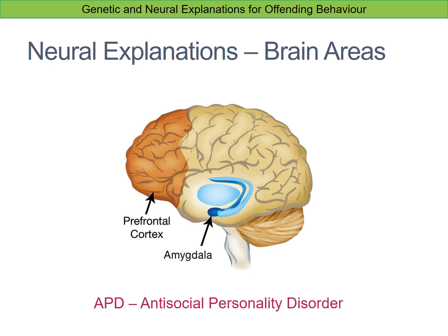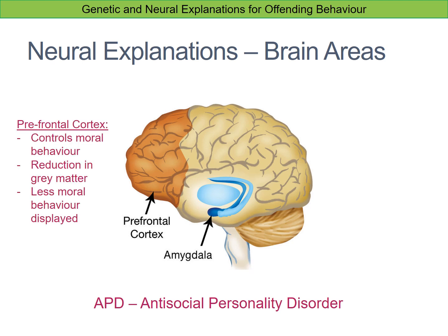Looking at neural explanations, starting with brain areas: one possible explanation is linked to antisocial personality disorder, or APD. This is associated with two areas of the brain — the prefrontal cortex and the amygdala. The prefrontal cortex is generally responsible for things like moral behavior, and it's been found that people with APD tend to have less gray matter in the prefrontal cortex. Less gray matter would suggest that less moral behavior is displayed and therefore more criminal behavior.